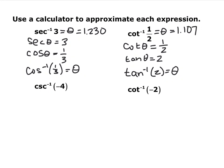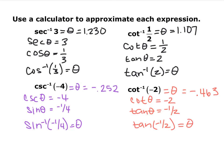Pause and try cosecant inverse of negative 4 and cotangent inverse of negative 2. For cosecant inverse of negative 4: that's equivalent to sine inverse of negative 1/4, giving negative 0.252. It's negative because the trig ratio is negative, placing it in quadrant 4. For cotangent inverse of negative 2: that's equivalent to tangent inverse of negative 1/2. Plug that into your calculator and you get negative 0.463. All of these are angles in radians.